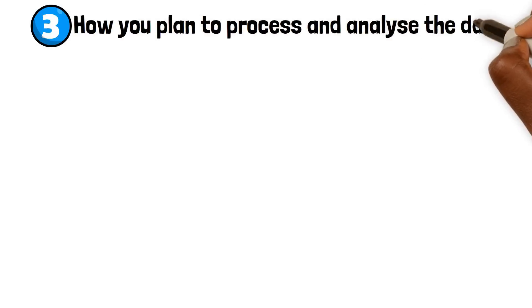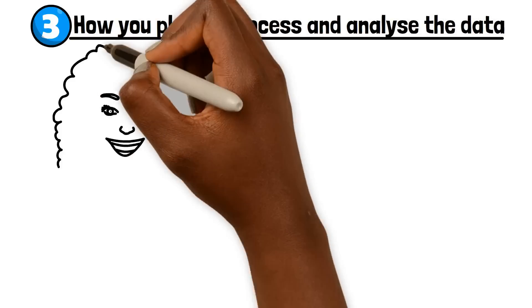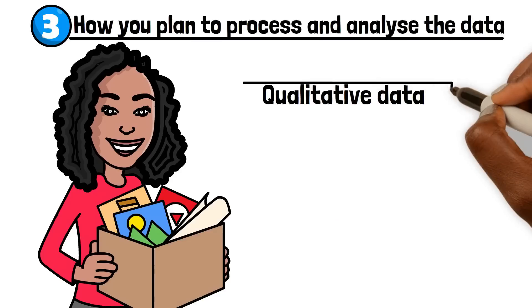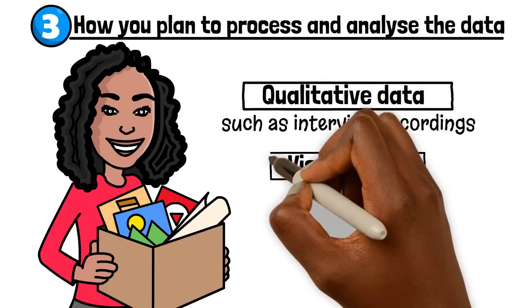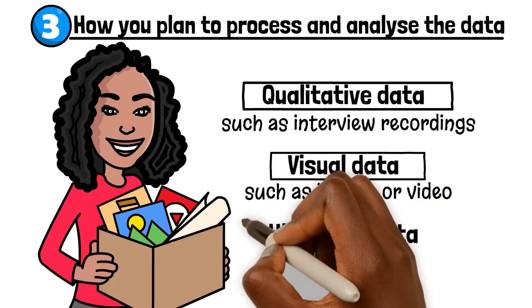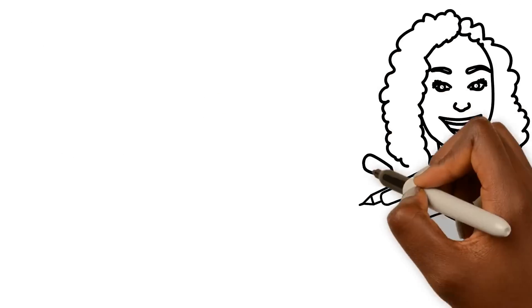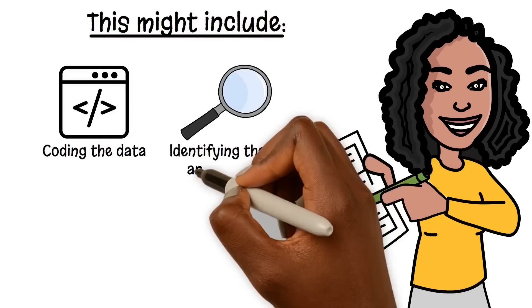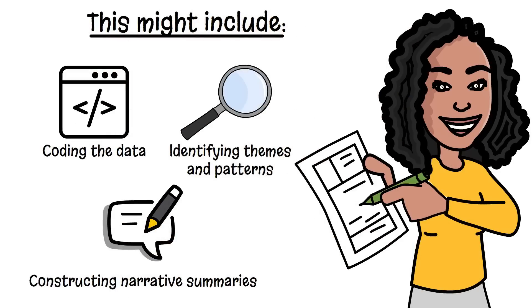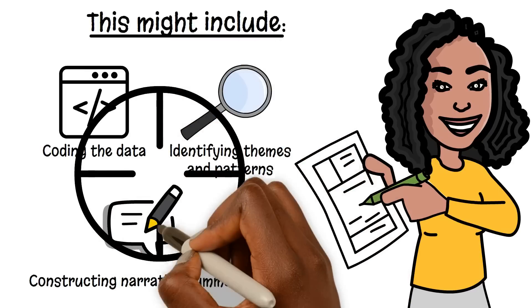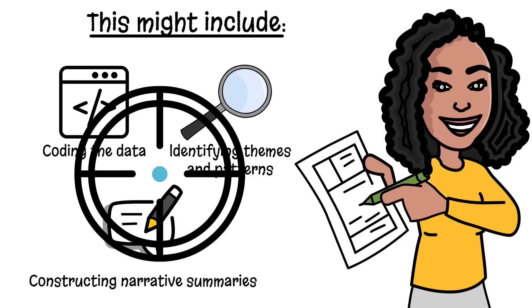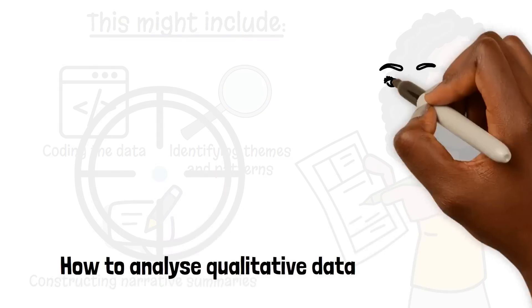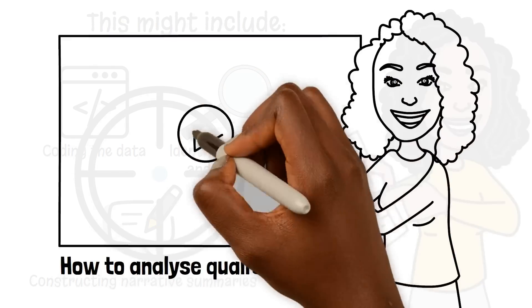Step 3: Describe how you plan to process and analyse the data. Qualitative data can include audio data, such as interview recordings, visual data such as images or video, and historical data such as newspapers. You should also explain the strategies you will use to interpret and analyse the data. This might include coding the data, identifying themes and patterns, and constructing narrative summaries. Be sure to provide enough detail so that another researcher can understand and replicate your analysis. If you want to learn more about how to analyse quantitative data, there is a video on my channel.